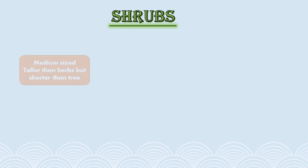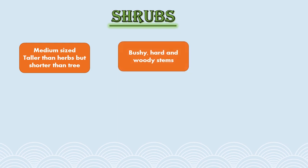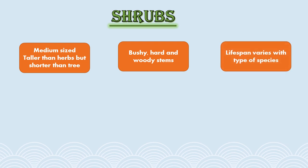The second type is shrubs. Shrubs are medium-sized woody plants. They are taller than herbs but shorter than a tree. Their features include bushy, hard and woody stems with many branches. Although the stems are hard, they are flexible but not fragile. The life span of these plants usually depends on the species itself.